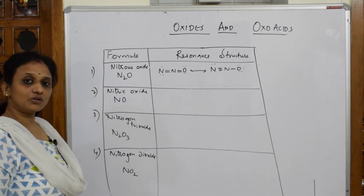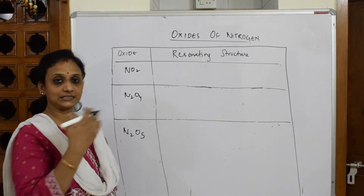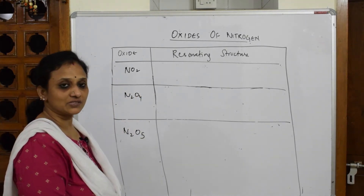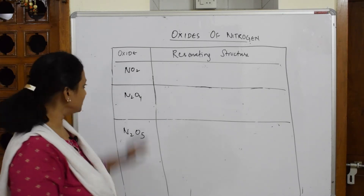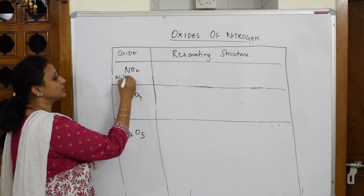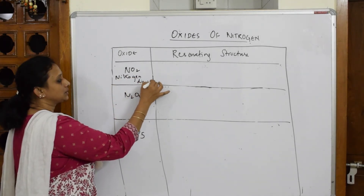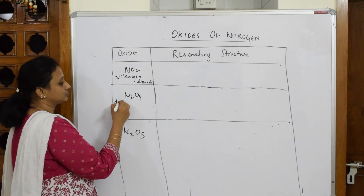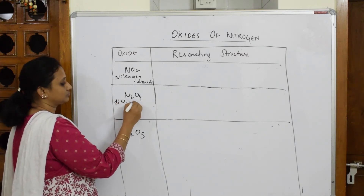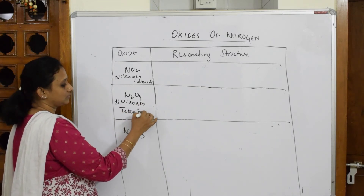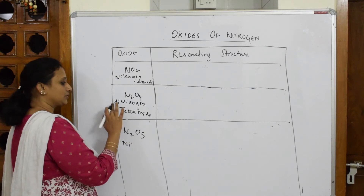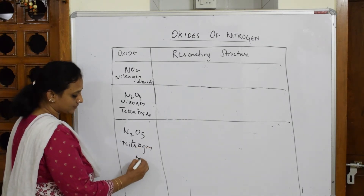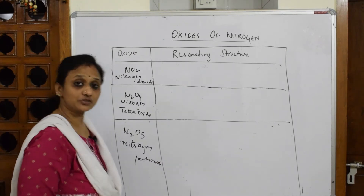We've drawn the resonance structures of nitrous oxide and nitric oxide. Now continuing the list: NO₂ is nitrogen dioxide; N₂O₄ is dinitrogen tetroxide; and N₂O₅ is nitrogen pentoxide. Let's come back and draw the structures of these oxides.